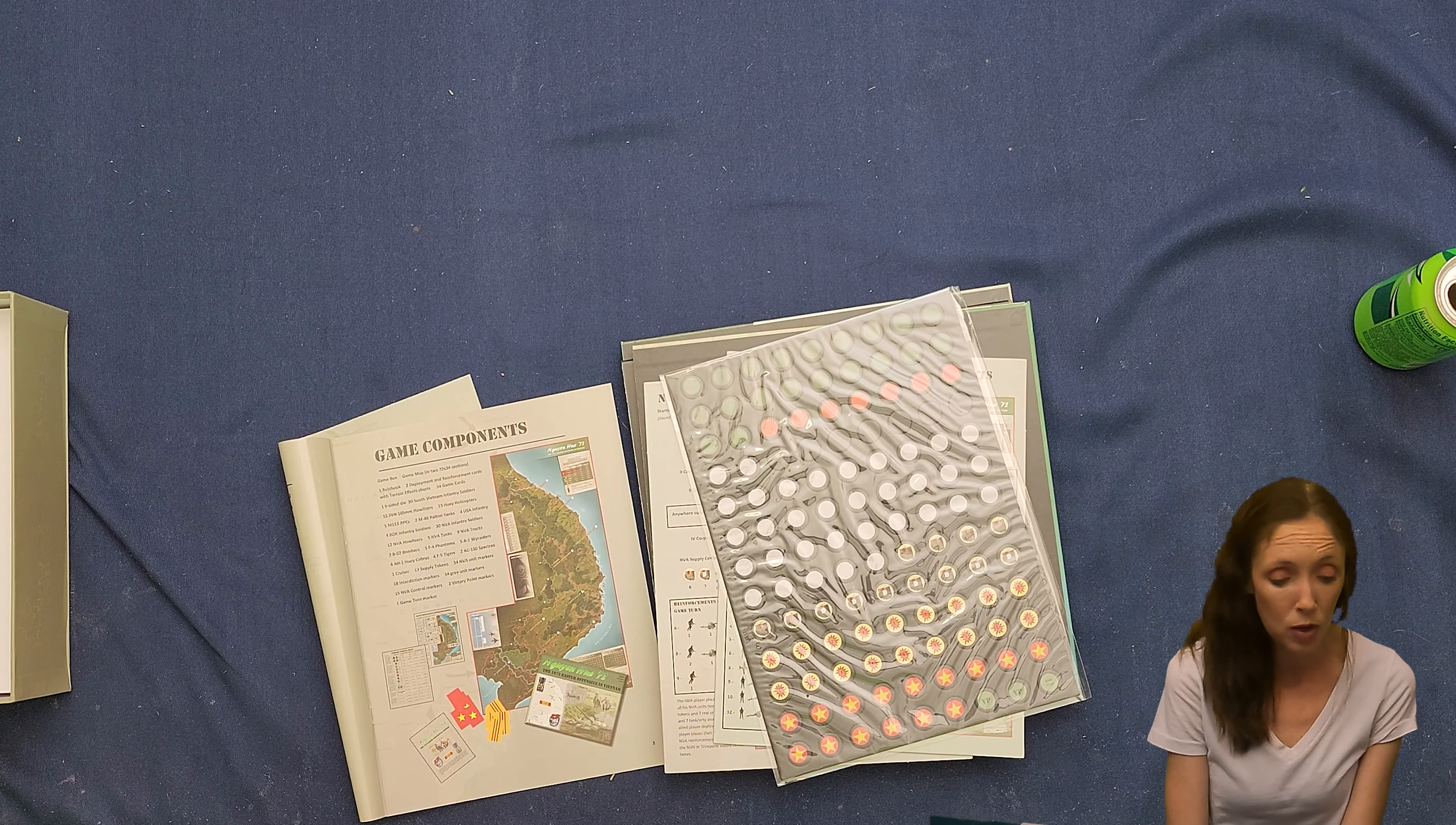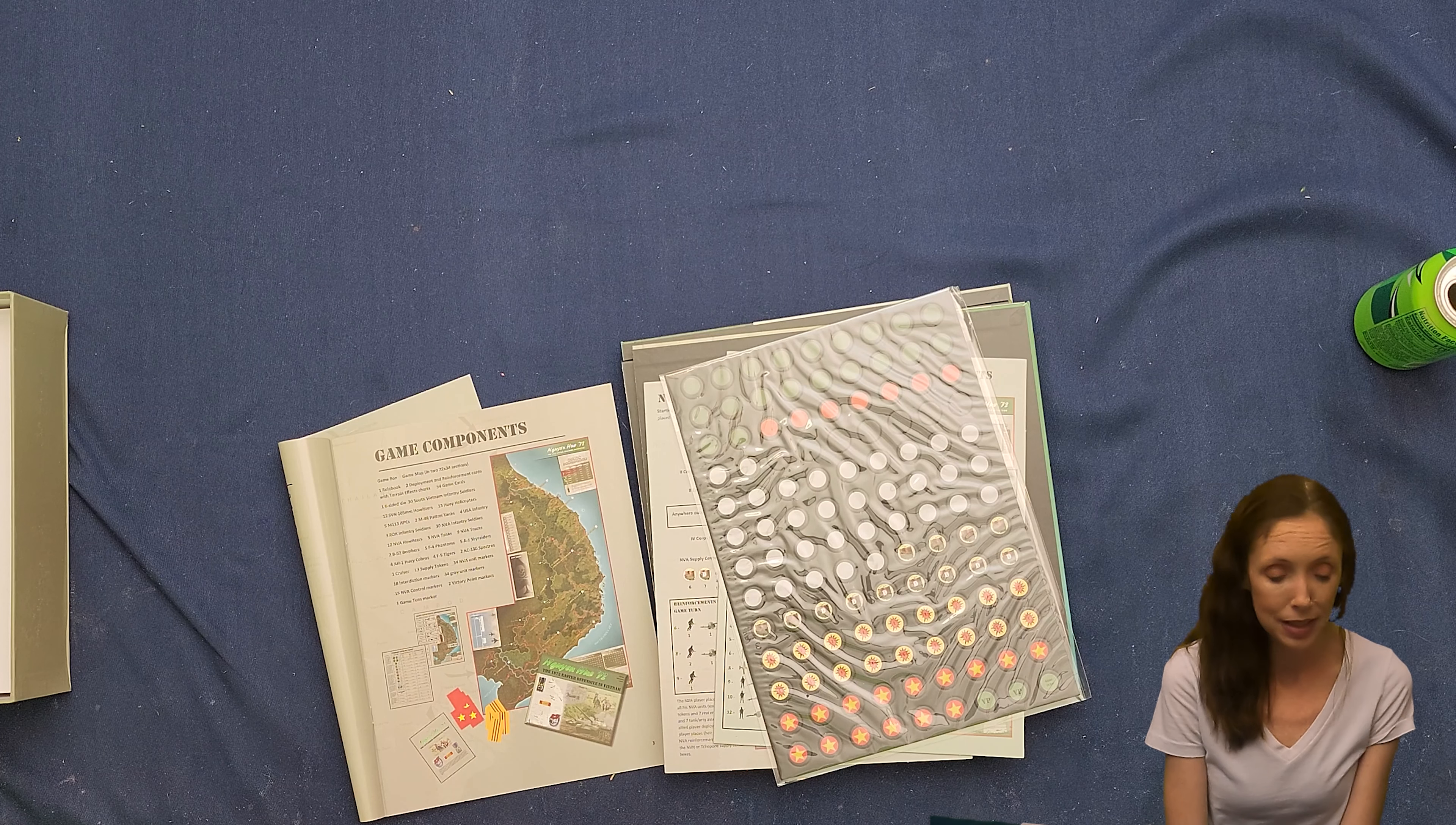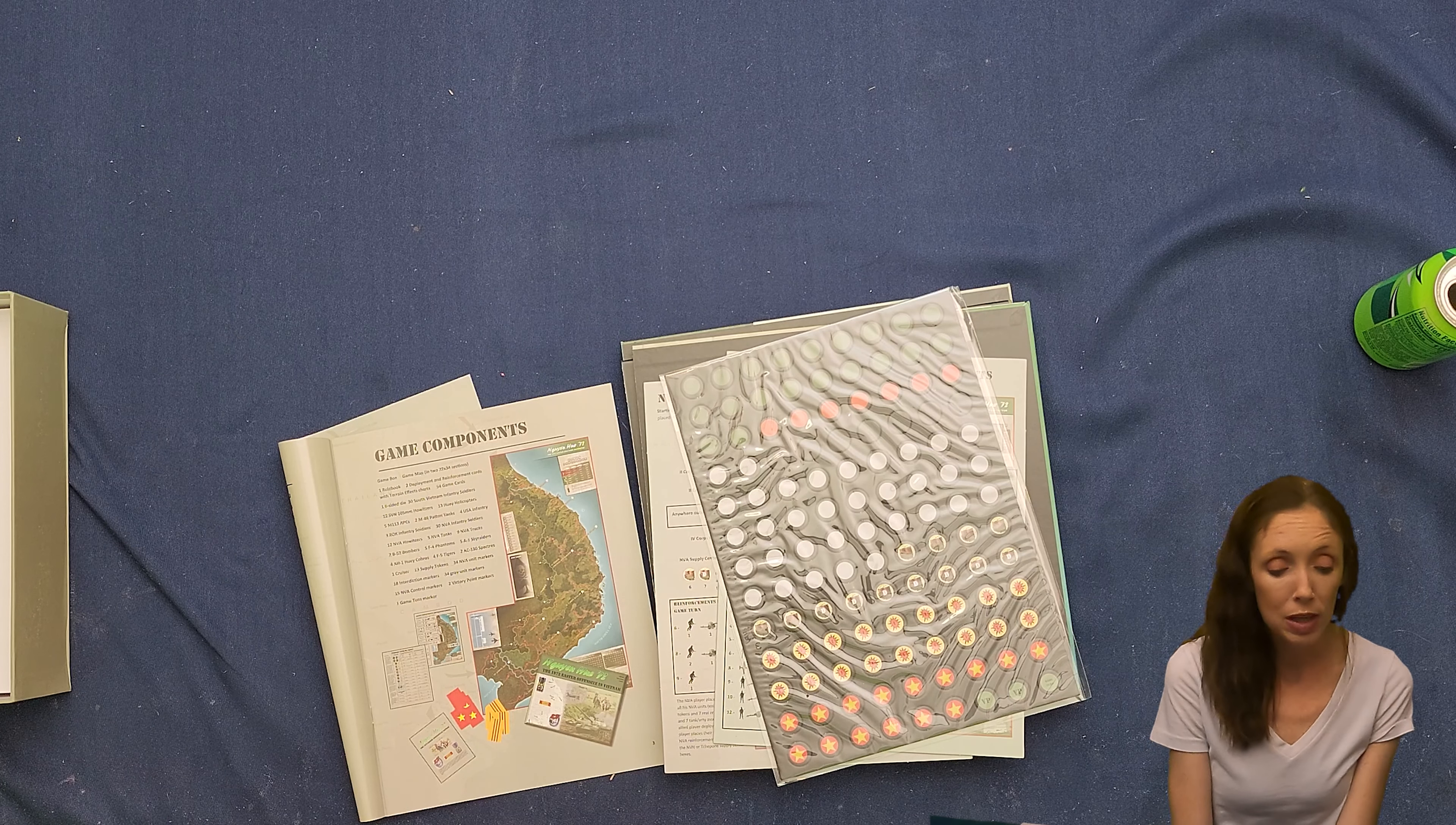M113 APCs or M113 APCs, two M48 Patton tanks, four U.S. infantry, three ROK infantry soldiers. I'm probably butchering a lot of these. Maybe they're supposed to be set as names and not as initials, but that's what I'm reading them off as. So, 30 NVA infantry soldiers, 12 NVA howitzers, five NVA tanks, nine NVA trucks, two B-52 bombers.